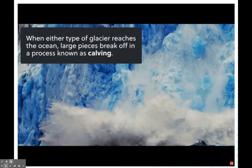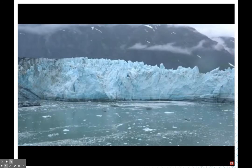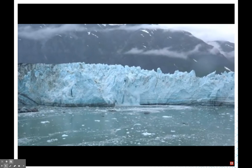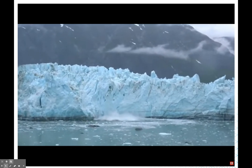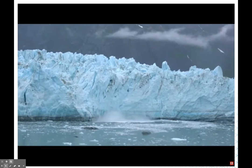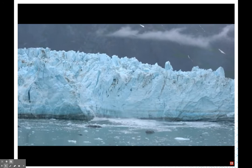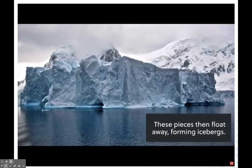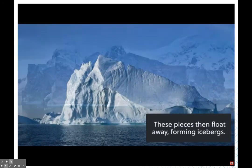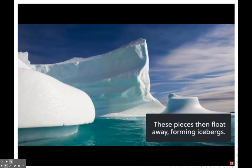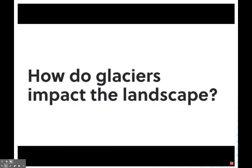When either type of glacier reaches the ocean, large chunks of ice tend to break off — this process is known as calving. As climate change continues and the atmosphere and oceans warm, calving is happening at a faster rate. These big chunks that fall off then float out into the sea, becoming icebergs.